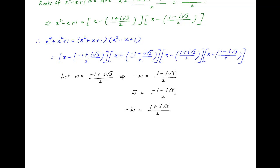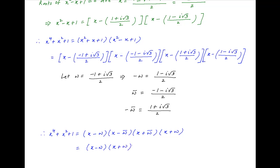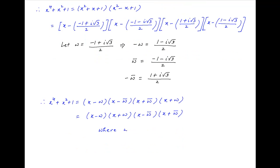Therefore, the given expression x to the power 4 plus x squared plus 1 can be expressed as (x minus omega)(x minus conjugate of omega)(x plus conjugate of omega)(x plus omega). This can be rearranged as (x minus omega)(x plus omega) multiplied by (x minus conjugate of omega)(x plus conjugate of omega), where omega equals minus 1 plus i times root 3 upon 2. And this is the required answer.